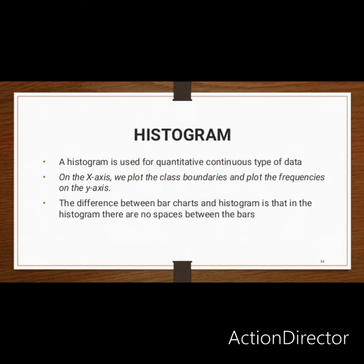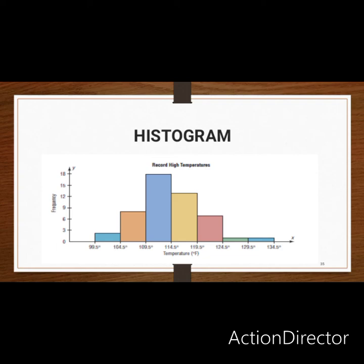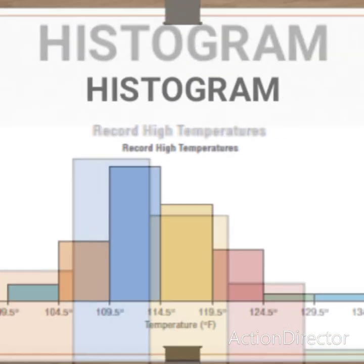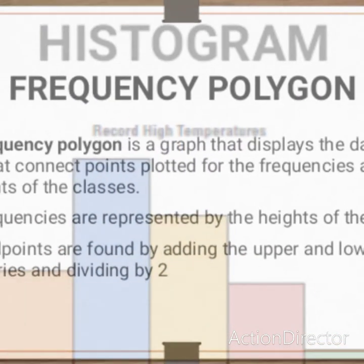Now let's look at graphical methods of data presentation for quantitative data. The first is the histogram, which is used for quantitative continuous types of data. You will see how a histogram is constructed in our next classes. The key difference from a bar chart is that there is no gap between each bar in a histogram, whereas in a bar chart there is always a gap.